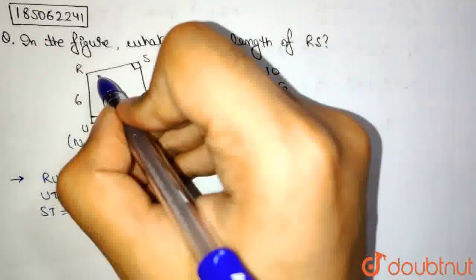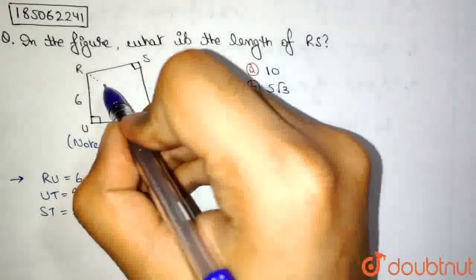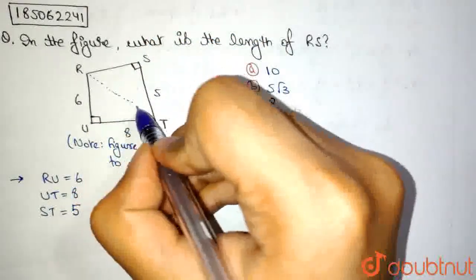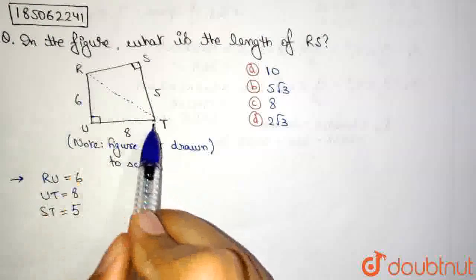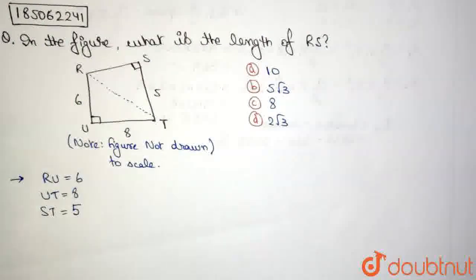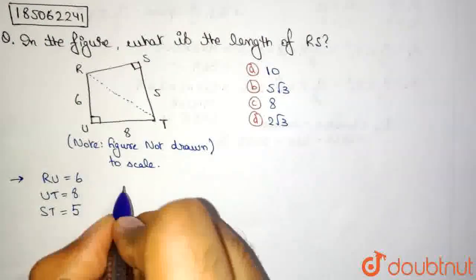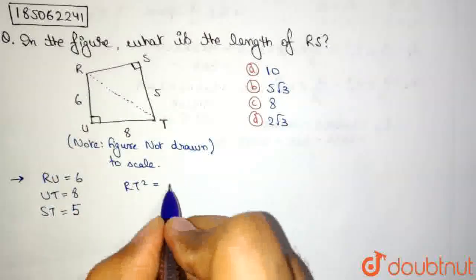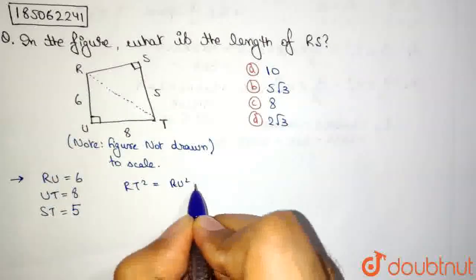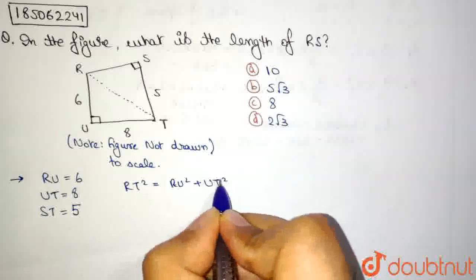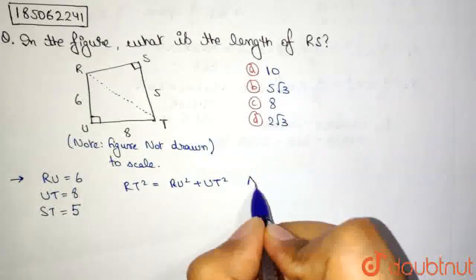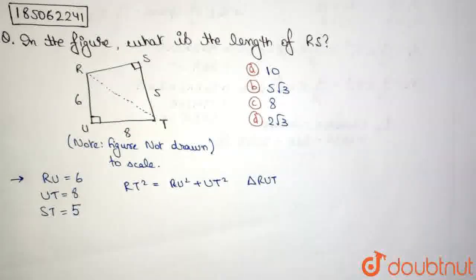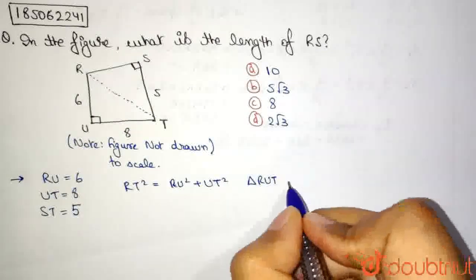So if we draw a diagonal here, RT, then we can say by using the Pythagoras theorem on this triangle, that RT square is equal to RU square plus UT square. This is triangle RUT, which is our equation 1.